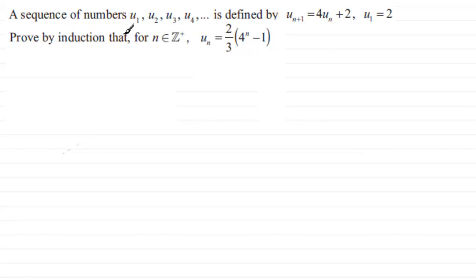And what we've got to prove, then, is that for any positive integer n, the nth term, u_n, is equal to 2/3 multiplied by all of 4 to the power n minus 1.